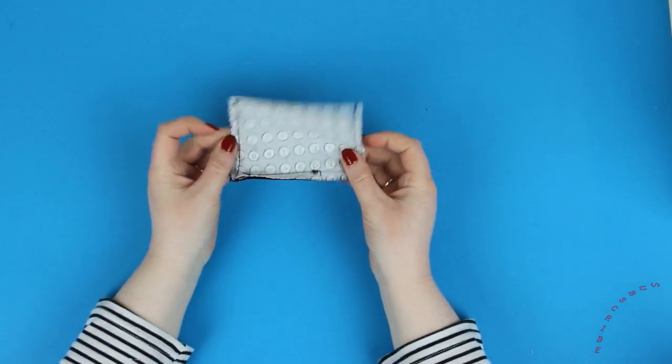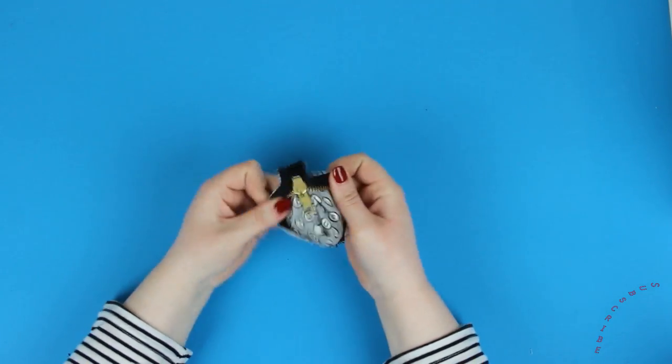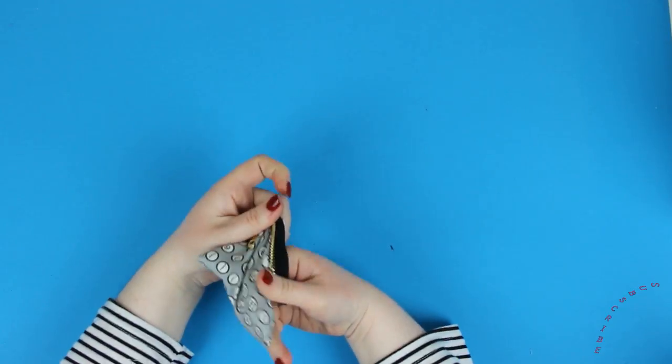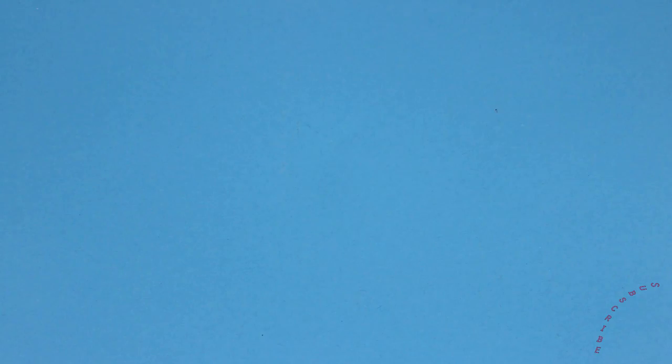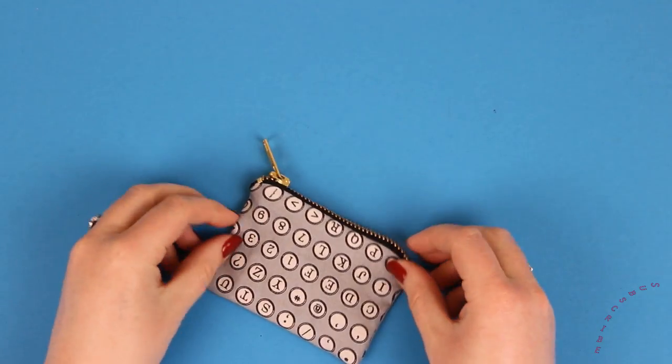Now turn your purse the right way around and then check your zip a few more times just to make sure that the fabric isn't catching. Once you're done give it an iron and you're good to go.